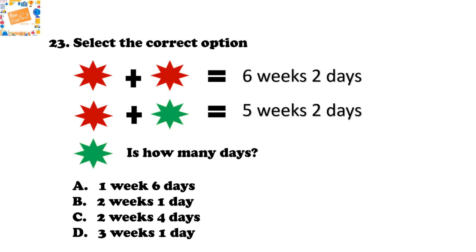Next question: Two red stars equal 6 weeks and 2 days. One red star plus one green star equals 5 weeks and 2 days. The question is: how many days is the green star? Options are: A) 1 week 6 days, B) 2 weeks 1 day, C) 2 weeks 4 days, or D) 3 weeks 1 day. This requires some computation, so take your time.